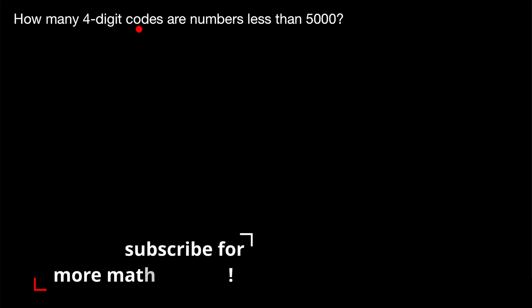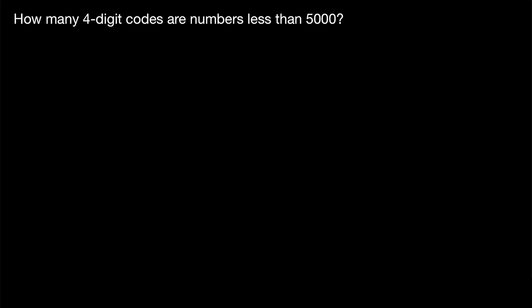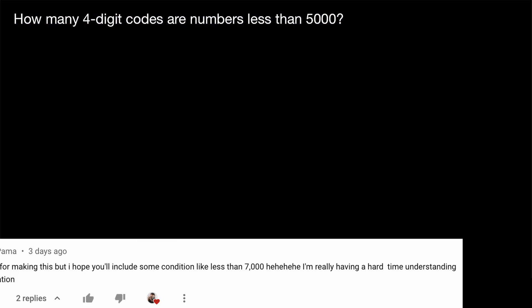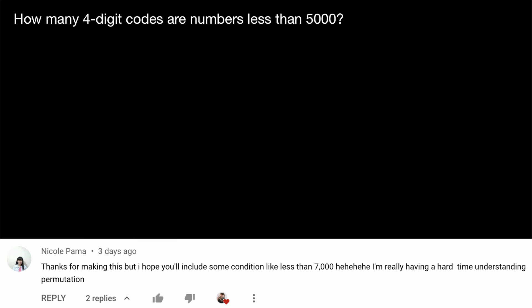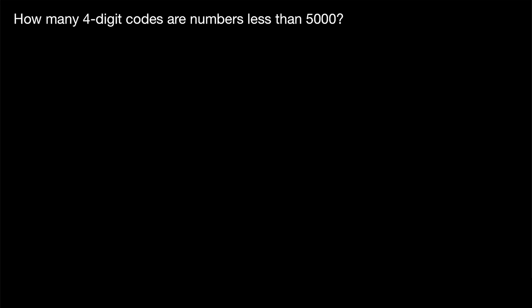How many four-digit codes are numbers less than 5,000? This is a bit of a weird counting problem. I say that it's weird because, as written, the question is kind of vague. We'll go over a couple interpretations of this problem and how to solve each one. I'll leave a link in the description to a similar lesson on some more basic examples of counting four-digit codes. So what's the weird part? It's asking us to count the number of four-digit codes that are numbers less than 5,000.